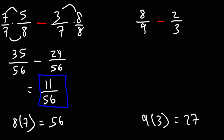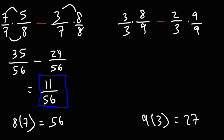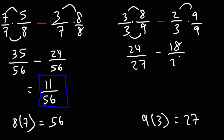So I'm going to use the same pattern as we've been doing. Let's multiply the first fraction by the denominator of the second, so that's 3 over 3. And let's multiply the second fraction using the denominator of the first, so 9 over 9. Now let's multiply across: 3 times 8 is 24, and 3 times 9 is 27. Here we have 2 times 9, which is 18, and 3 times 9 is 27. 24 minus 18 is 6, so we get 6 over 27.